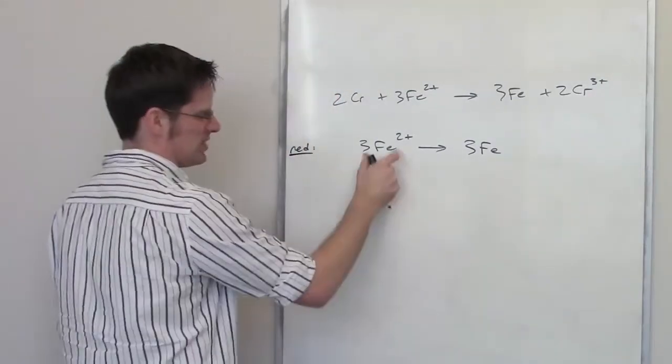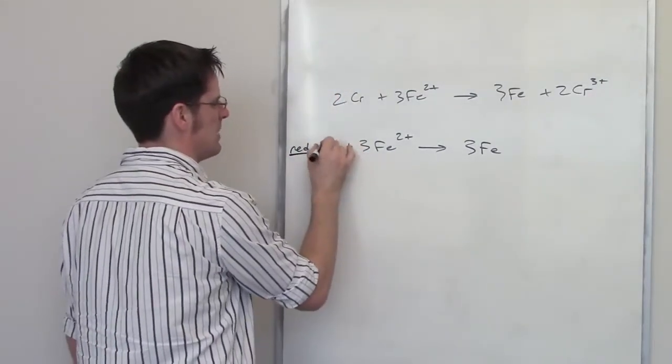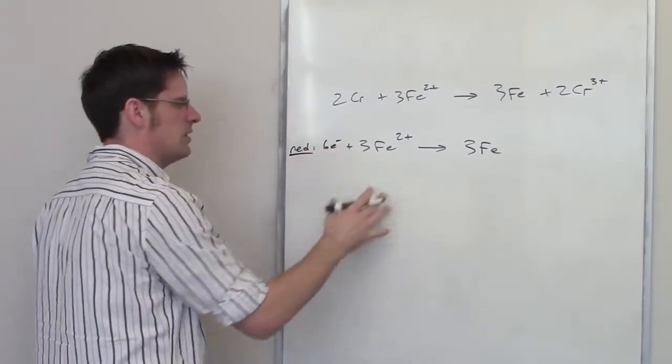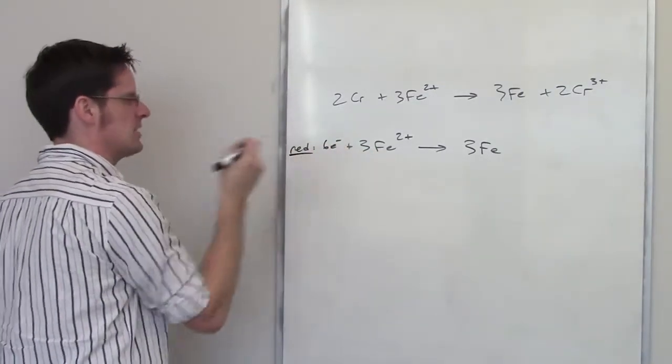In order to balance out the charge, I've got a total 6+ charge on the left. I'm going to have to have 6 electrons on the left, and that should do it. We can see that this iron is gaining these electrons.